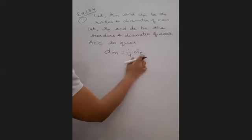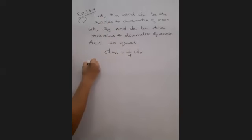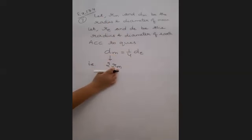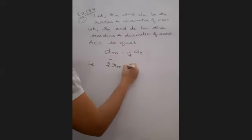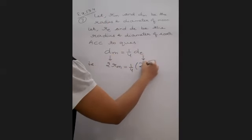What is the relation between diameter and radius? The radius is half of diameter. Does it mean diameter of moon is two times radius of moon? And diameter of earth means two times radius of earth?